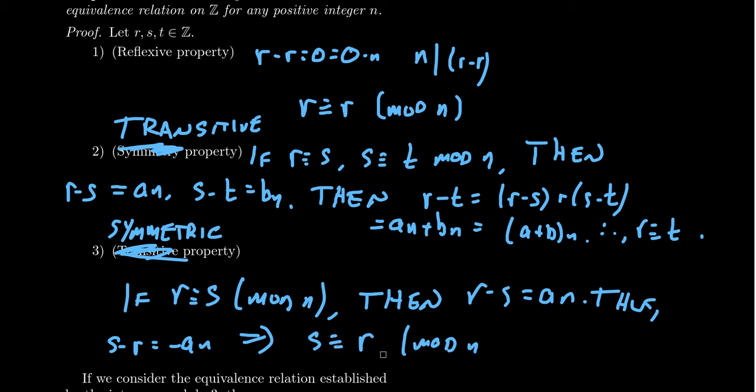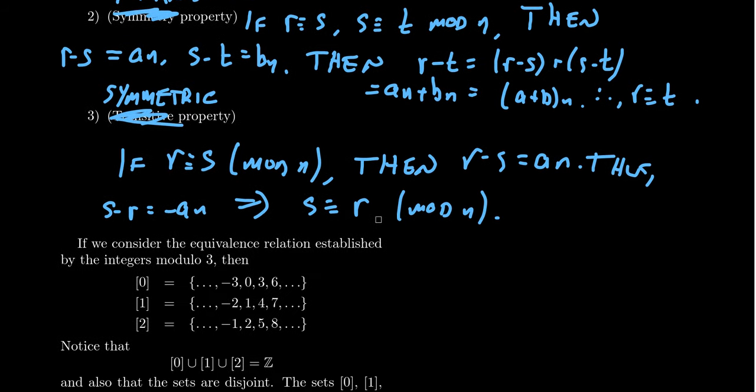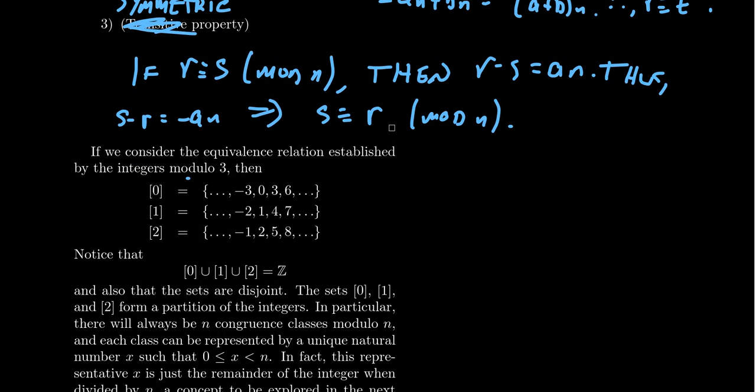And that implies, of course, that S is congruent to R mod N. So the symmetric property falls pretty quickly here. So congruence mod N is an equivalence relationship. And so let me give you an example of this. If we take the integers mod 3, you're going to get exactly three congruence classes.